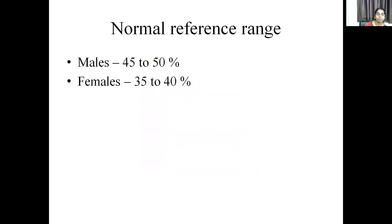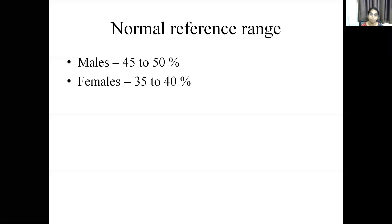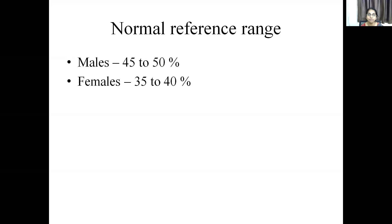The normal reference range of hematocrit is males 45–50% and females 35–40%. From the PCV, we can derive hemoglobin by dividing the PCV by 3. For example, if a male has PCV of 45%, dividing by 3 gives 15 g/dL as the hemoglobin concentration. This is a rough estimation useful when direct hemoglobin measurement is not available.